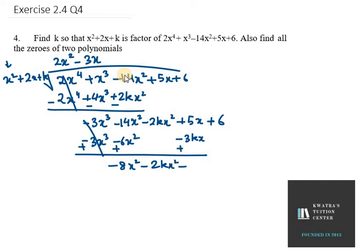The sign changes, giving plus 8kx. Then after it we have plus 6. We write 5x minus 3kx — sorry, plus 3kx — and plus 6 as the remaining terms to carry forward.